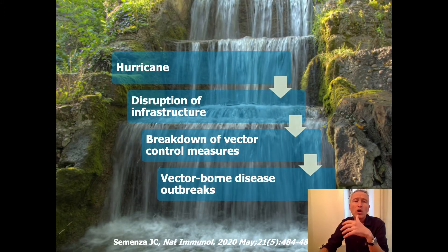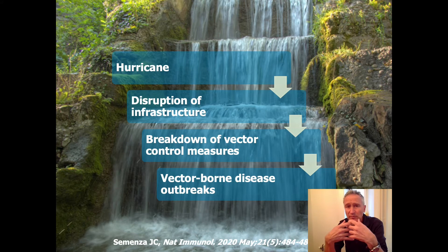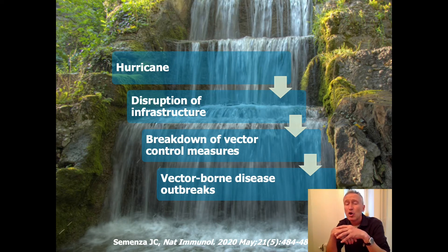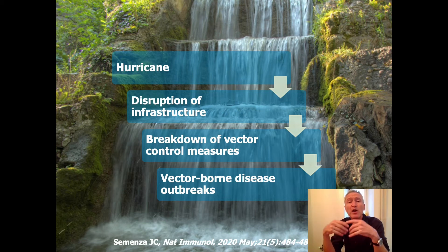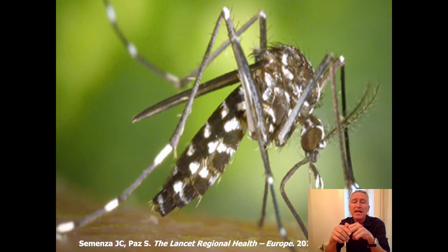We can expand the concept of waterborne diseases to vector-borne diseases, because mosquitoes require water as part of their life cycle - the eggs are laid in water and they have to hatch in water. Standing water is required for mosquitoes. If a hurricane, for example, can disrupt critical infrastructure and leads to a breakdown of vector control measures, that in turn can lead to a vector-borne disease outbreak, which has been observed for dengue or chikungunya in the Caribbean or in Latin America. You can read about these type of outbreaks in the paper listed at the bottom of the slide.